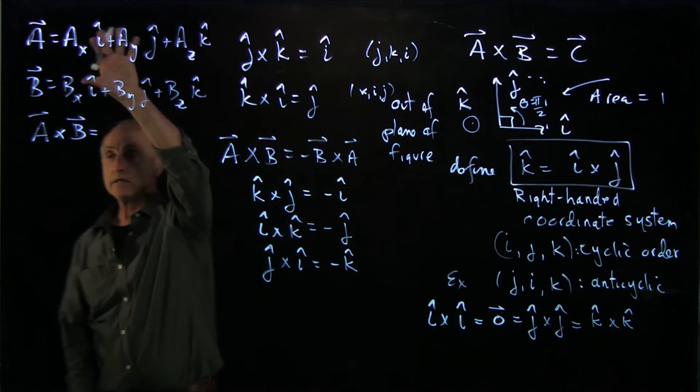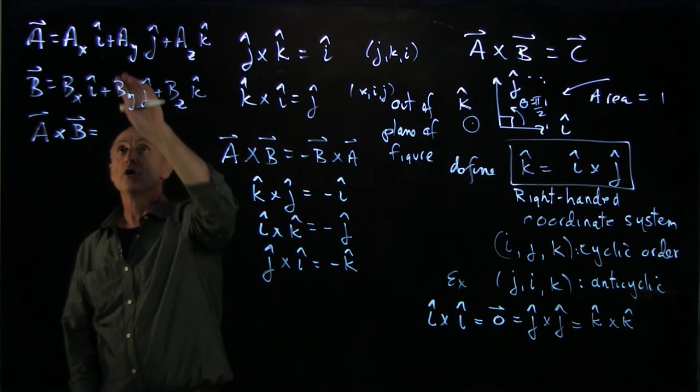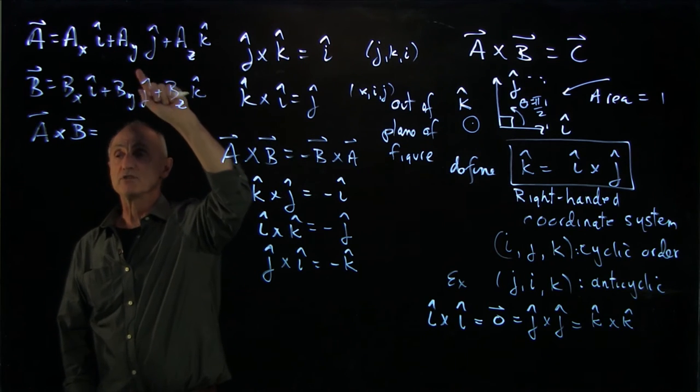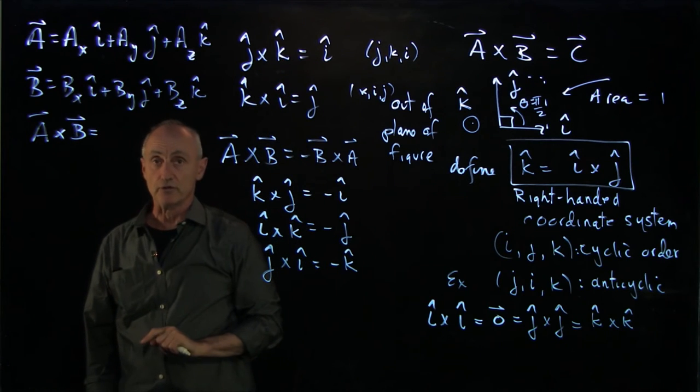as is j hat cross j hat k hat cross k hat. So of these nine parts, when we take the cross product, three of them will be 0 by this rule. And we'll apply our cyclic or anti-cyclic rules for the others.